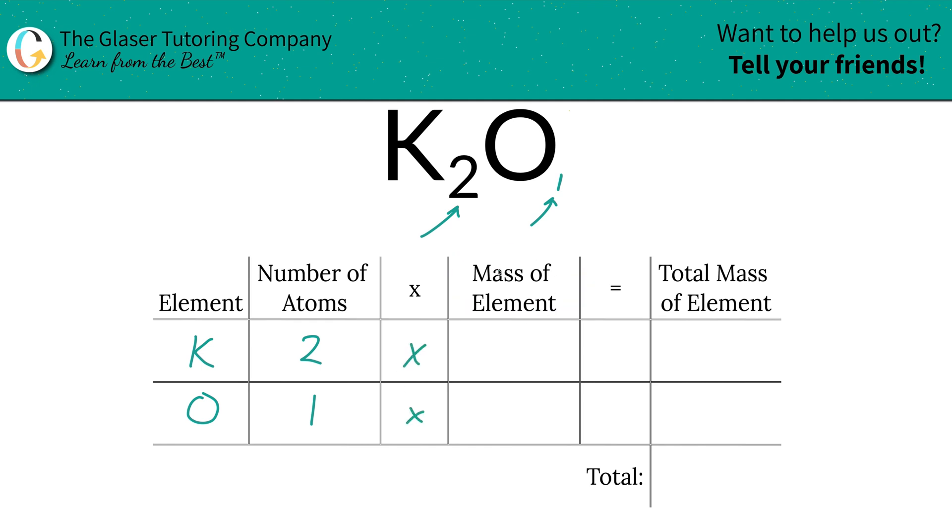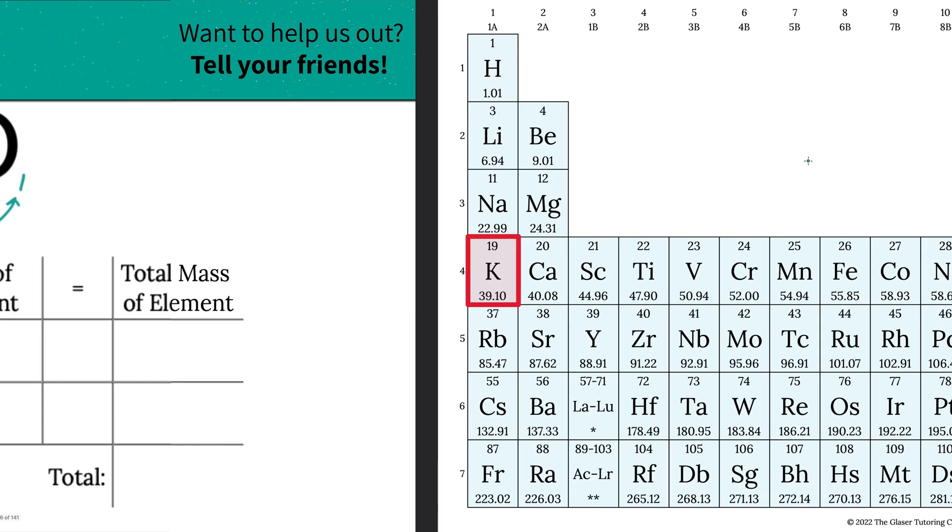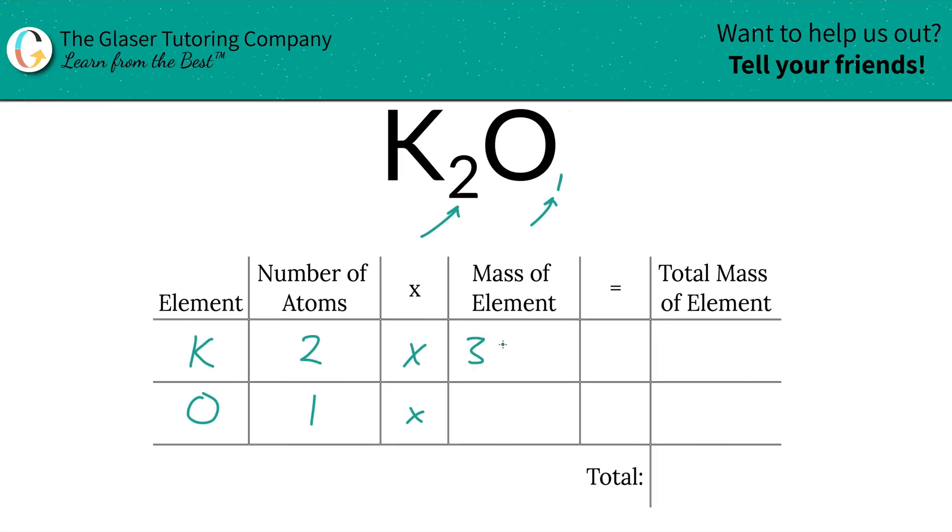Then we're going to take those number of atoms and multiply it by the mass of the element. That's where the periodic table comes into play. So we have potassium here, 39.10, and we have oxygen over here, 16.